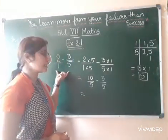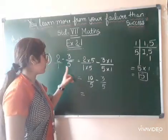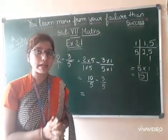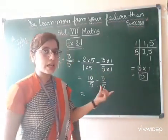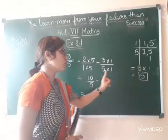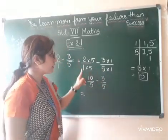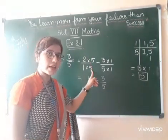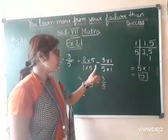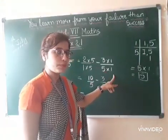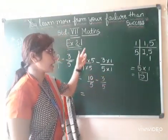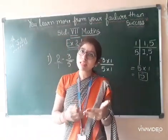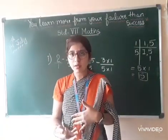Hamne ismein kya kiya? Ye dono denominators alag thi. Yahan pe 1 thi, yahan pe 5. Toh hamne uska LCM liya. LCM mein hume kya mila? 5. That means hum yahan pe denominator mein 5 lenge, taaki dono equal ho jaaye. Ab yahan pe 1 tha, toh 1 into 5 hoga. 1 five is 5. And here 5 into 1 will give you 5. The same number you multiply in the denominator, you will multiply in the numerator also.